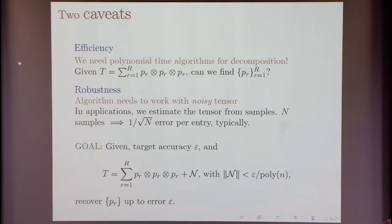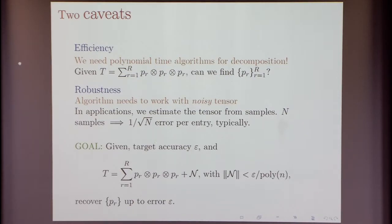The computational goal is the following. We have a target accuracy ε to which we want to learn all the parameters. If we can find this tensor up to an error which is ε over polynomial in n — by taking the number of samples to be a fairly large polynomial, we can ensure that this happens — then using this, we want to infer the parameters up to an error ε.